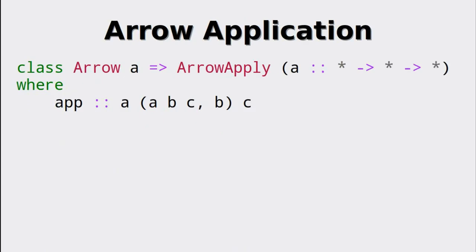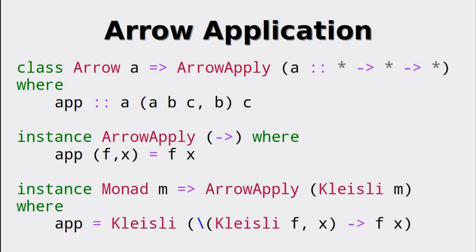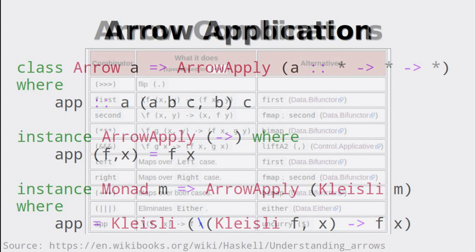Something we have not seen so far are arrows of higher order, meaning arrows that take arrows as arguments. Arrow applications are an extension to our arrows that have this feature. For functions the implementation is straightforward and trivial. For monads, this definition gives rise to a very similar definition to how the bind operator is defined — and indeed the arrow application is equivalent to monads.